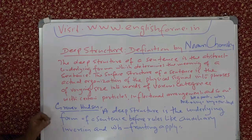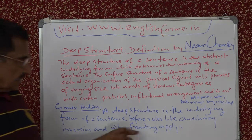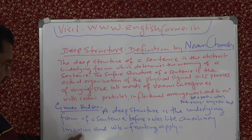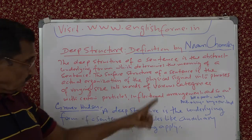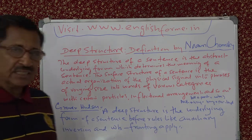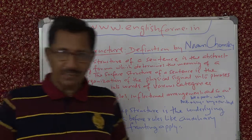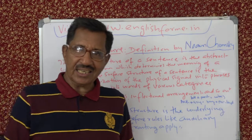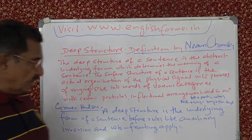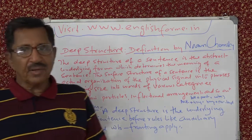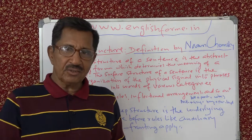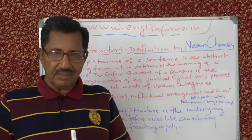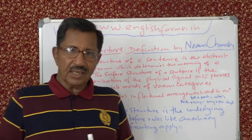Another definition is by Grover Hudson. The deep structure is the underlying form of a sentence before rules like subject-auxiliary inversion — for example, 'he is eating' becomes 'is he eating?' — or WH-fronting apply. WH-fronting means for WH questions, you have to bring the WH word to the front of the sentence.